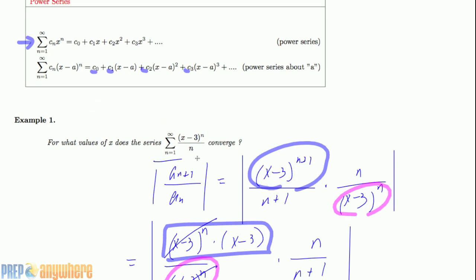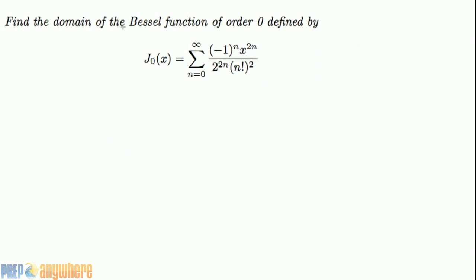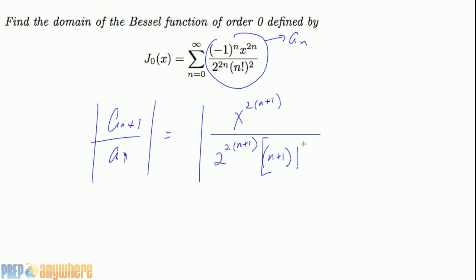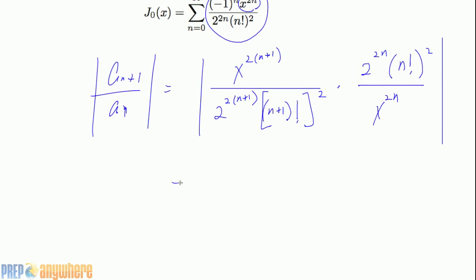When x falls in the range 2 to 4, this particular power series converges. Next: find the domain of the Bessel function of order zero. We again use the ratio test. Let a_n be the general term, so a_(n+1) replaces all n with n+1, giving x to the power of 2(n+1) over 2^(2n+2) times ((n+1)!)^2. Divide by the reciprocal of a_n, putting x^(2n) on top.